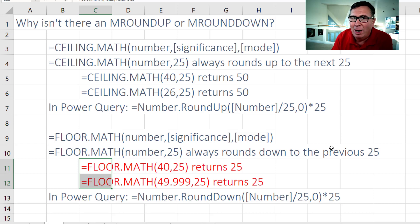For me, this is really doing M Round Up or M Round Down. But for whatever reason, it's not called M Round Up or Down. It's called Ceiling.Math.